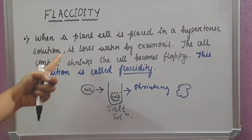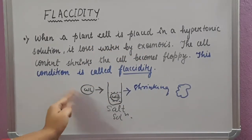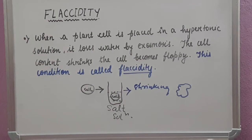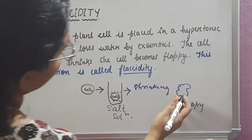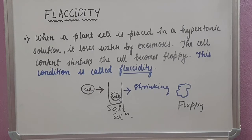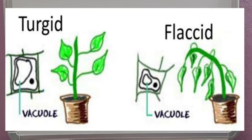When a plant cell is placed in a hypertonic solution, it loses water by exosmosis — the water gets out from the cell. The cell contracts and becomes floppy. This term is called flaccidity. Here you can see a comparison between flaccidity and turgidity, and the difference between a flaccid plant and a turgid plant.